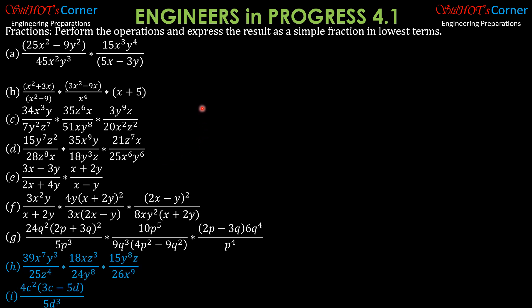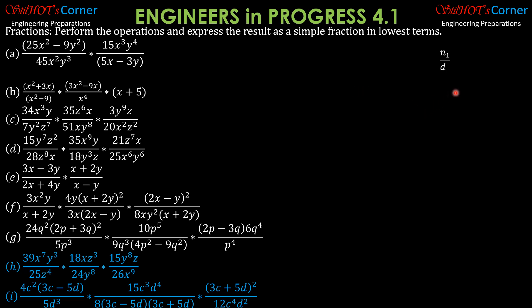For the guide, we have numerator 1 over denominator 1, then times numerator 2 over denominator 2. Let's find common factors and cancel them so that the result would be the final numerator over new denominator.